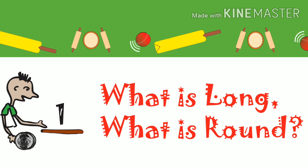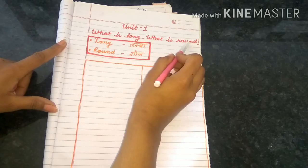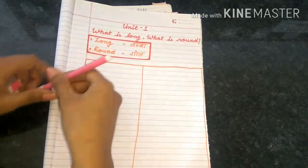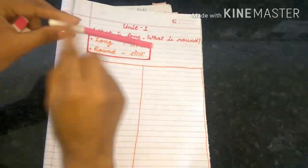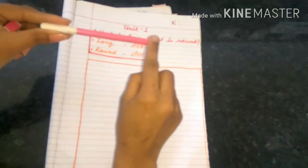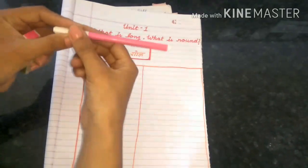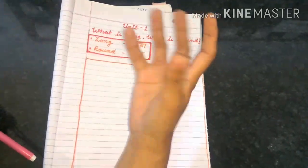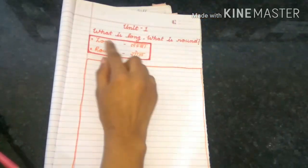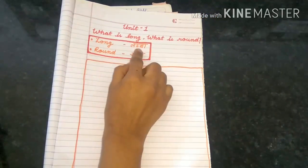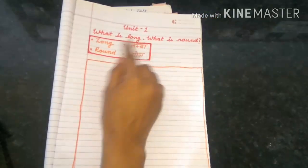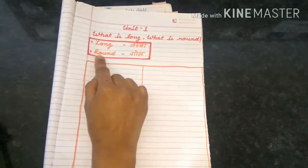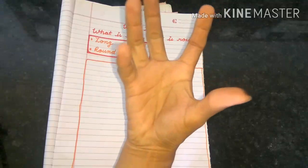What is long? What is round? Long means lumbar, round means goal.